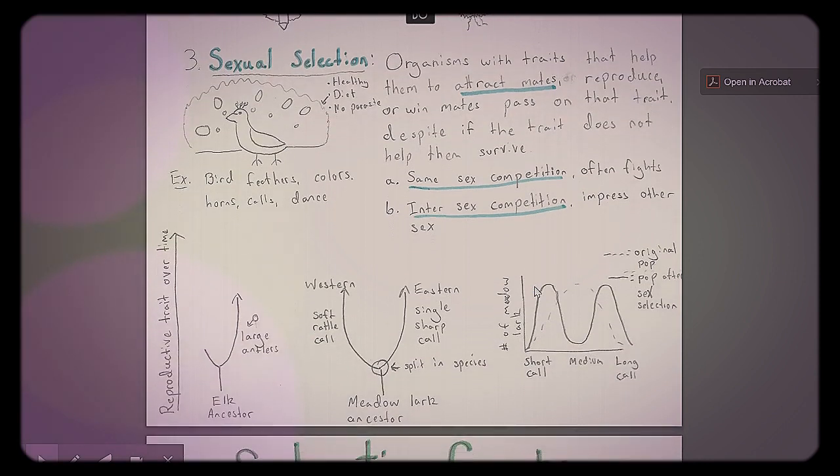The last one we looked at is sexual selection, and this one always kind of bothered Darwin. Why are males and females different, and why are there these extravagant colors that don't necessarily help survival? And especially the peacock was always the example of something that bothered him. Not that he didn't like peacocks, but it didn't help his explanation of natural selection. But sexual selection is organisms with trait that help them to attract mates, reproduce, or win mates, pass on that trait, despite if the trait helps them survive or not. With the peacock, having the large feathers does not help them escape from predators, so it doesn't fit the environment. So that's why it doesn't go with natural selection. But it does help them attract mates.